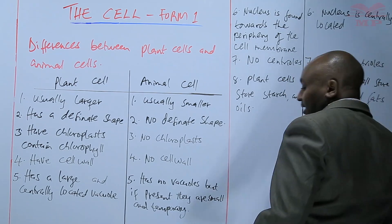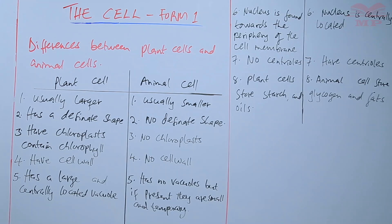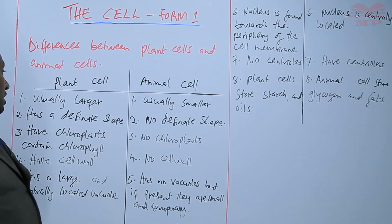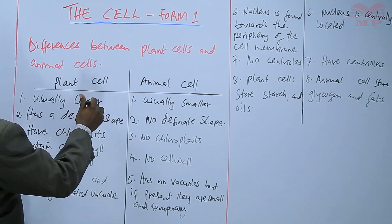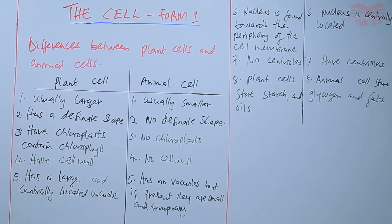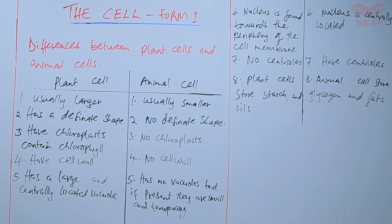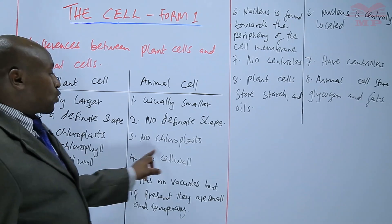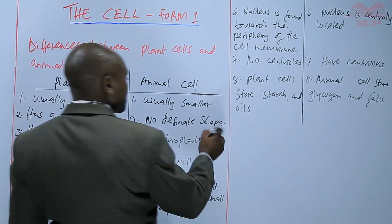So those are the differences between plant cells and animal cells. In terms of size, the plant cell is larger and the animal cell is smaller. In terms of shape, the plant cell has a definite shape, while the animal cell has no definite shape. Plant cells have chloroplasts containing chlorophyll for photosynthesis; in animal cells there are no chloroplasts, hence no photosynthesis.